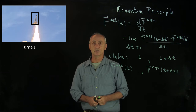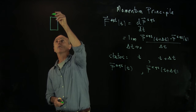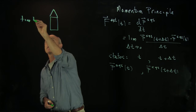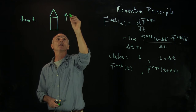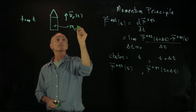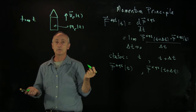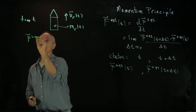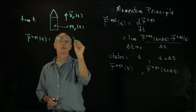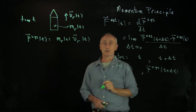Let's begin by analyzing the system at time t. At that time, we had our rocket with a velocity v_r(t). The mass m_r(t) — recall this was the dry mass of the rocket plus the mass of the fuel. So it's very simple to write down the momentum of our system at time t: that's equal to m_r(t) times the velocity of the rocket at time t.